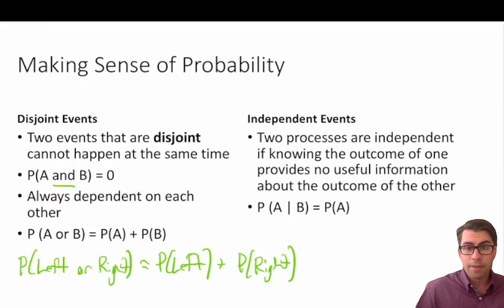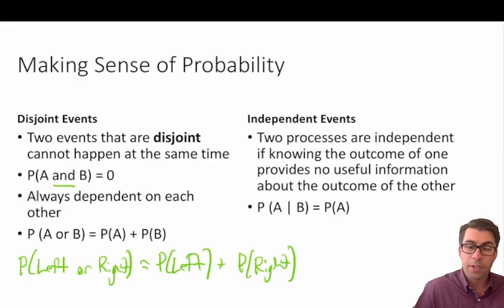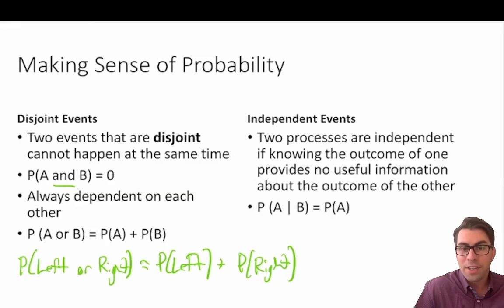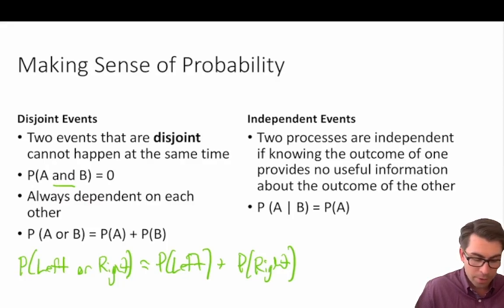A good example of two independent events: the probability of you watching this video is independent of the knowledge that I just had a grilled cheese sandwich for lunch. Knowing that I had a grilled cheese sandwich should not change your probability of watching this video. Knowing that I had a grilled cheese does not inform your probability of watching this video — it does not change.